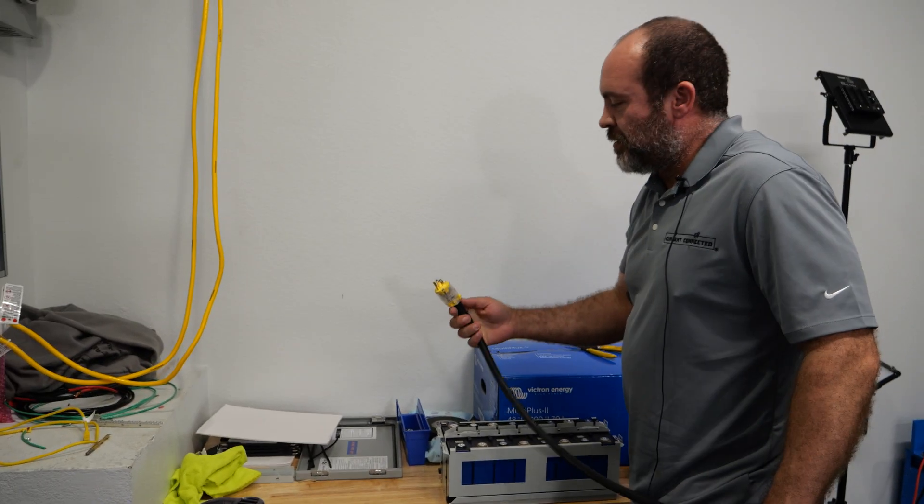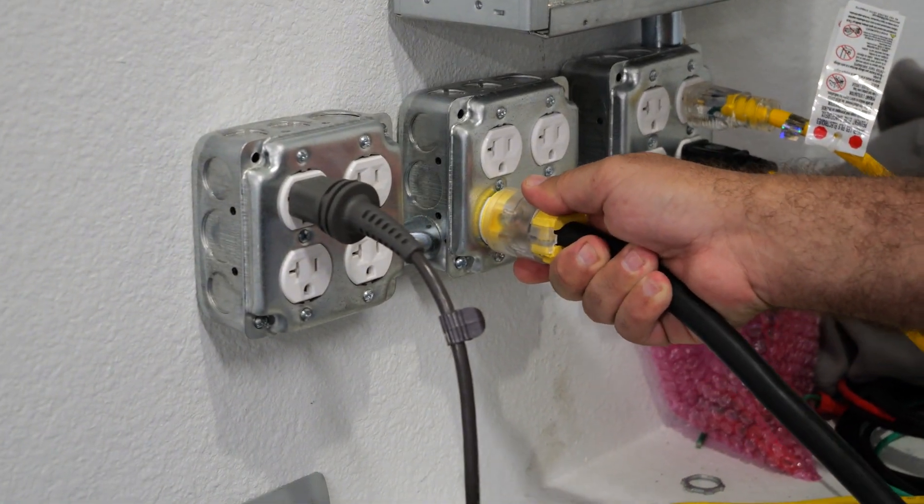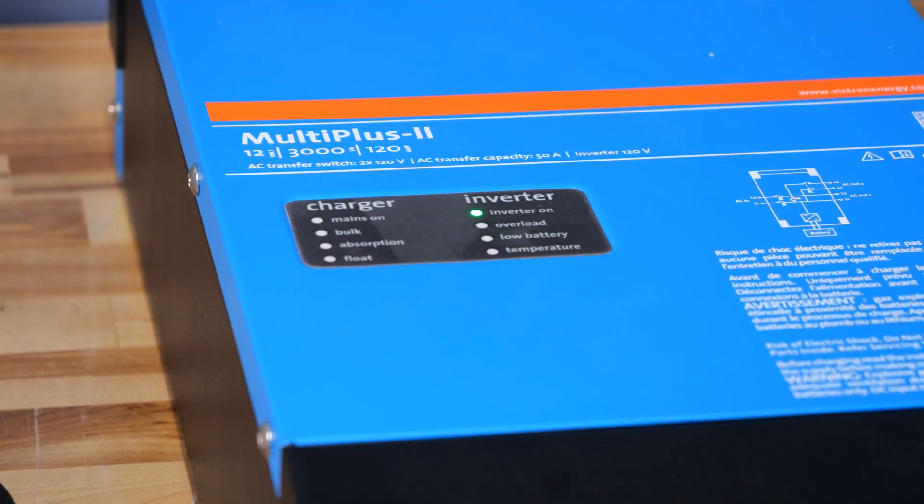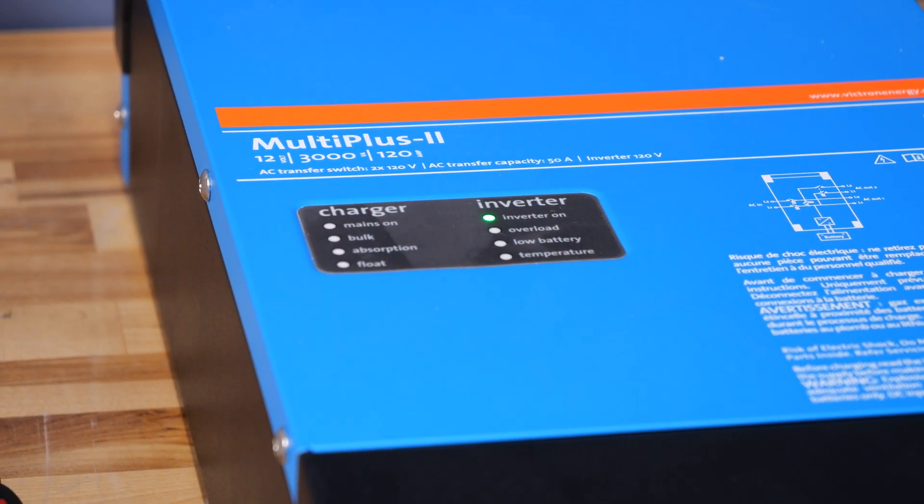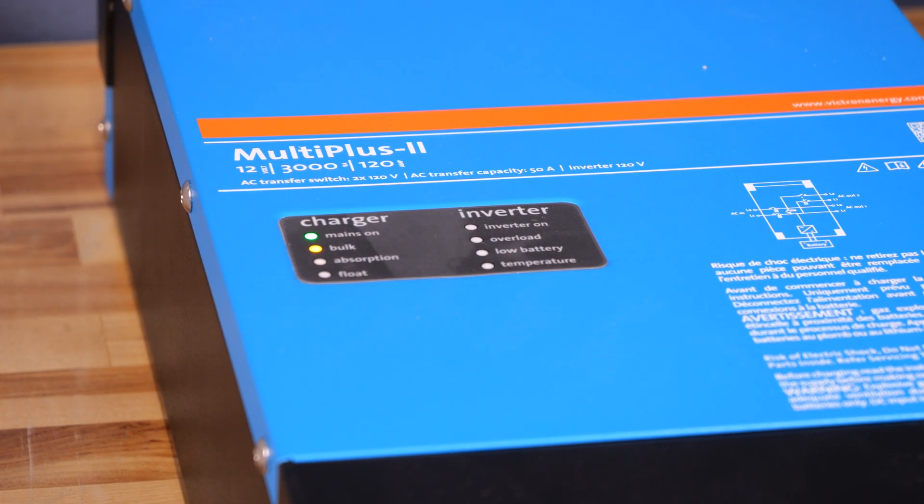We've unplugged the charger. We're going to plug this into shore power so we can test it in strictly charging mode. The inverter will now switch over to the mains. There's the switchover. It's now charging in bulk.